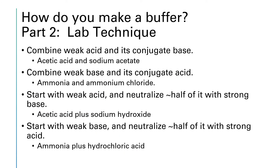As far as actually making this in the lab, there are a couple of different approaches. If you have a bottle of formic acid and a bottle of sodium formate, great — you can just combine those two chemicals. You take your weak acid and its conjugate base, or your weak base and its conjugate acid, figure out how many grams of each you need, weigh it all out, combine them, and you're good to go.